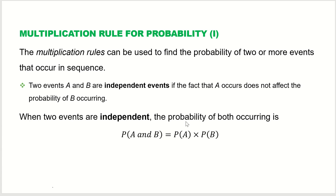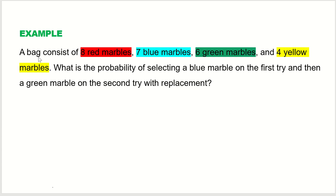Let's take an example and use this formula. A bag consists of 8 red marbles, 7 blue marbles, 6 green marbles, and 4 yellow marbles. What is the probability of selecting a blue marble on the first try and then a green marble on the second try, with replacement?